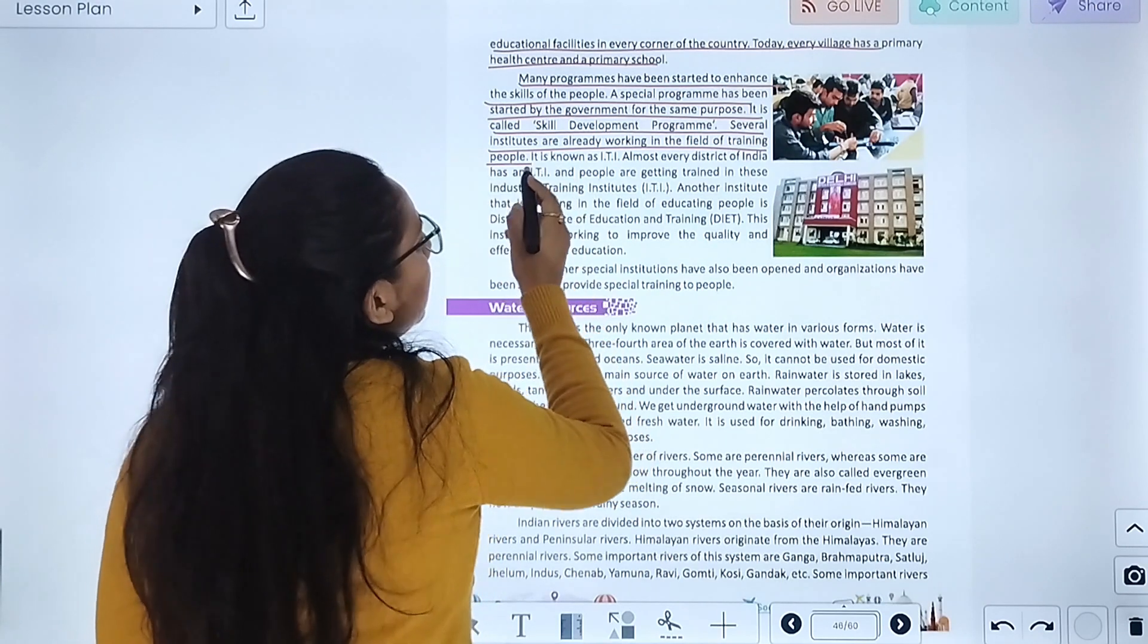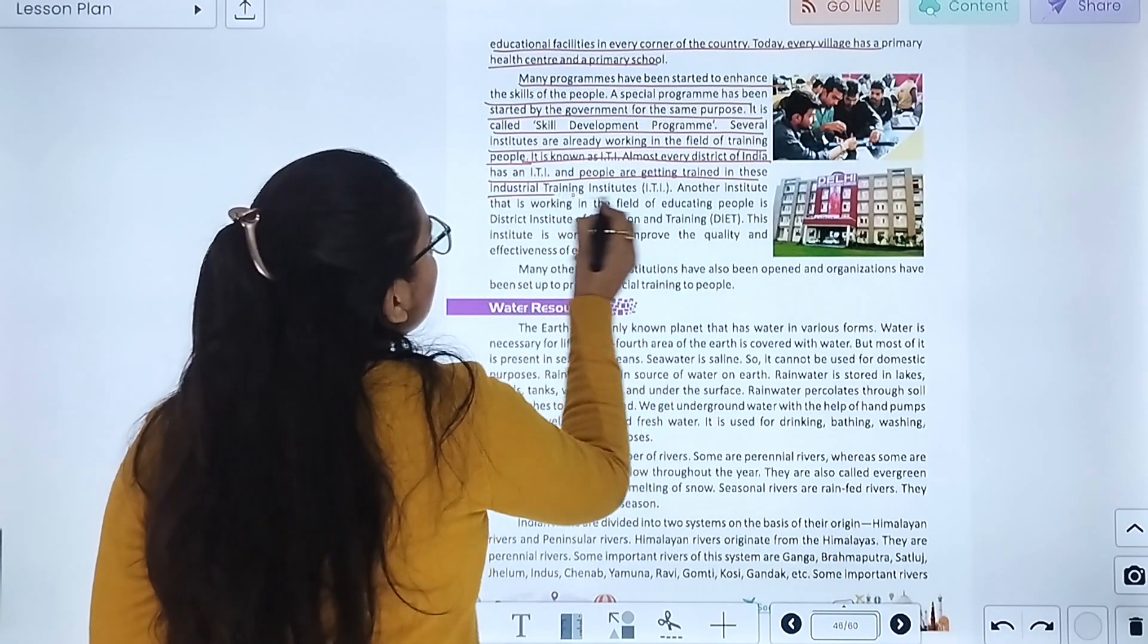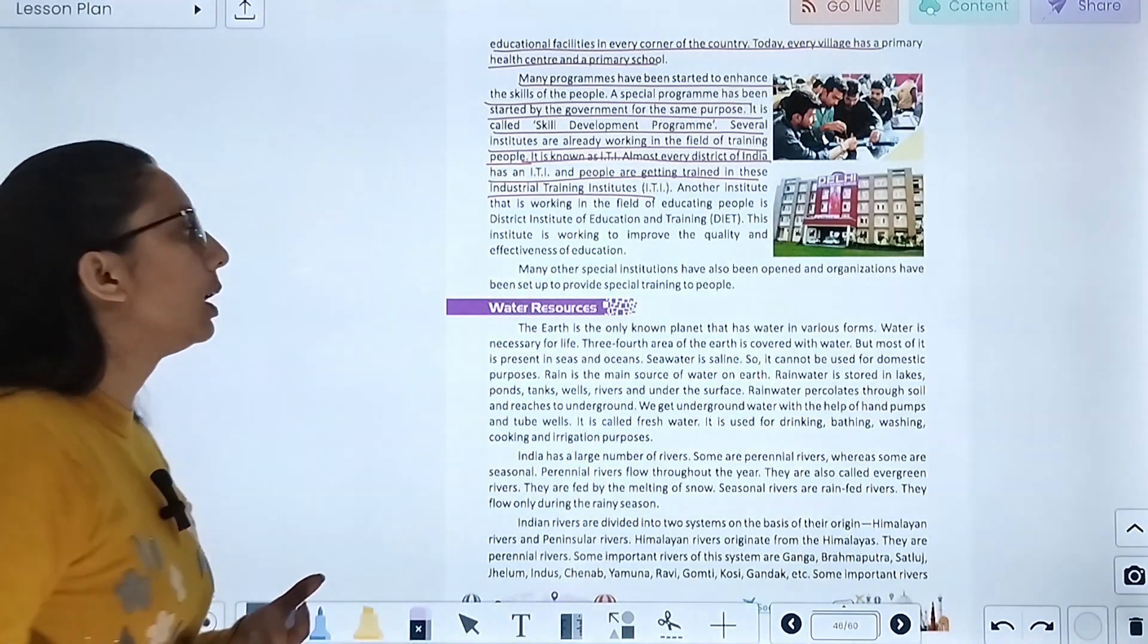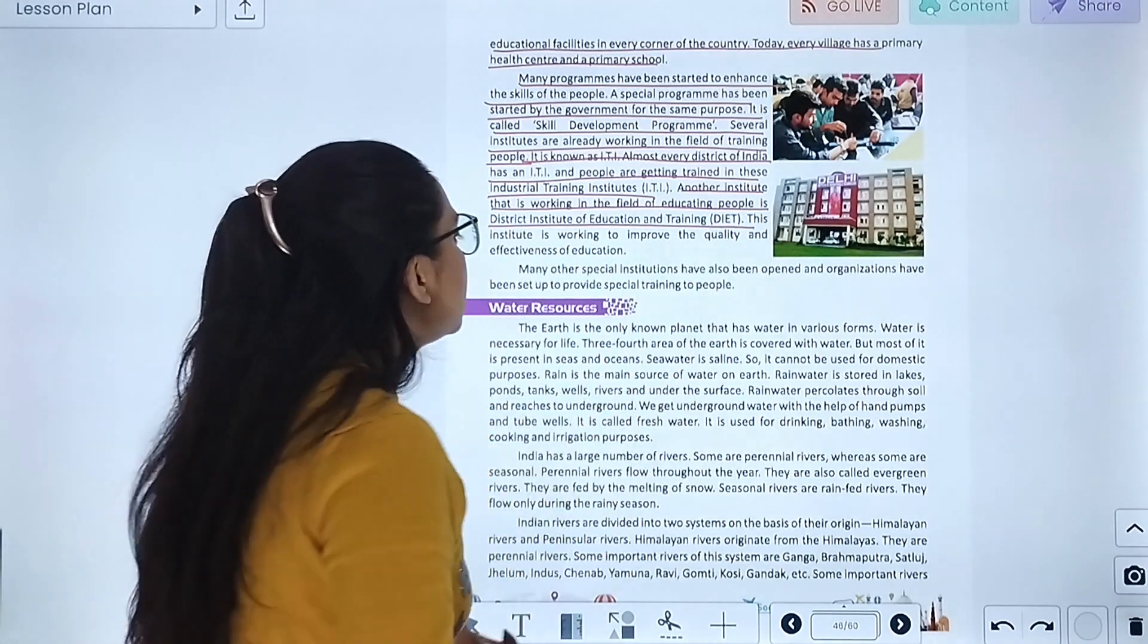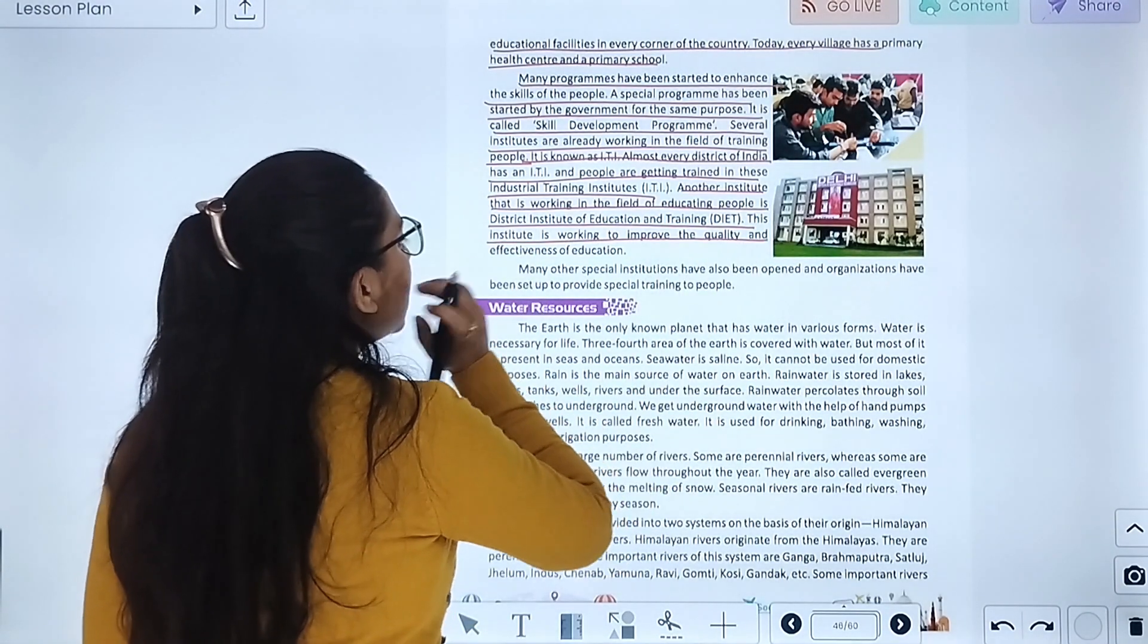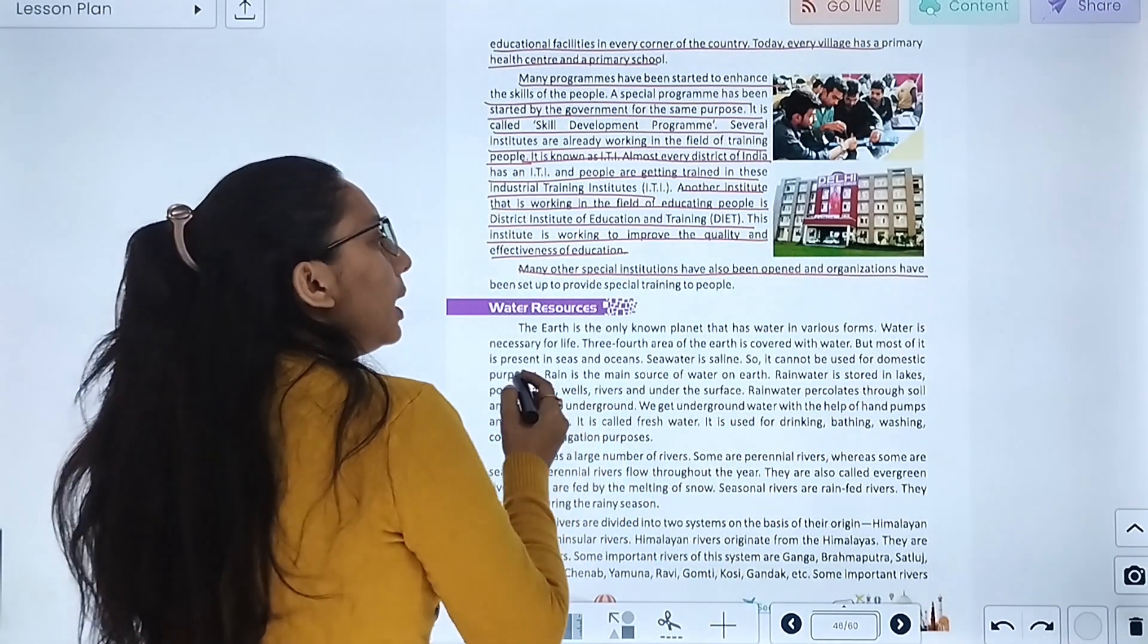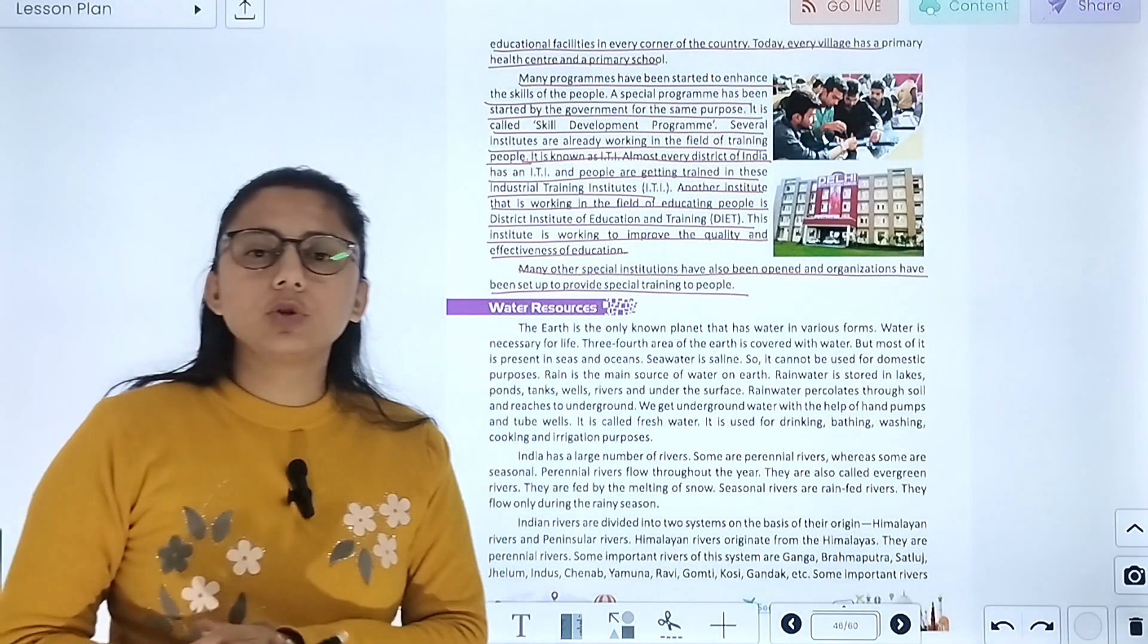A special program has been started by the government called skill development program. Several institutions are already working in the field of training, known as ITI, Industrial Training Institute. Almost every district of India has an ITI and people are getting trained in this. Another institute working in the field of educating people is DIET, District Institute of Education and Training. This institution is working to improve the quality and effectiveness of education. Many other special institutions have also been opened to provide special training.